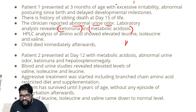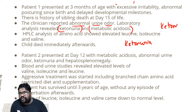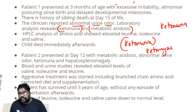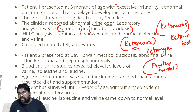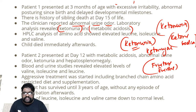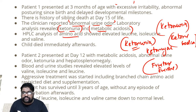Remember there is a difference between ketosuria and ketonuria. In ketosuria, ketose sugars like fructose or sucrose come in the urine. But ketonuria means ketone bodies are coming out in the urine — like acetone, acetoacetate, and beta-hydroxybutyrate. The clinician reported abnormal urine odor. HPLC analysis of amino acids showed elevated levels of leucine, isoleucine, and valine.